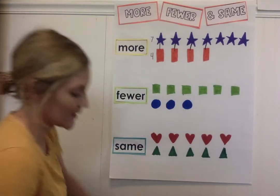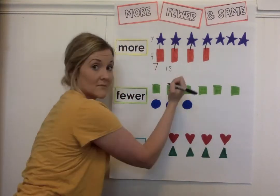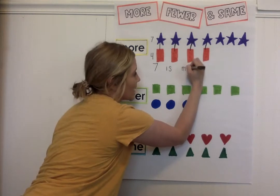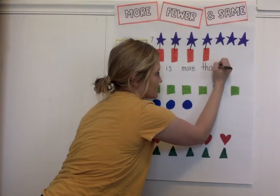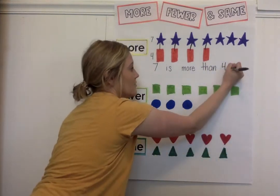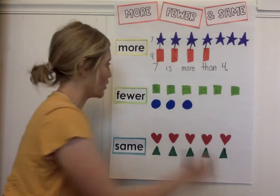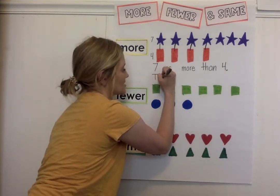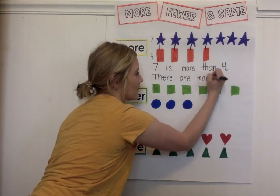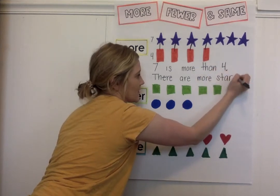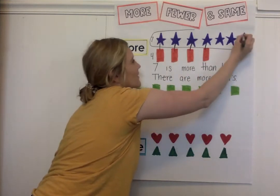If we talk about it in numbers, we would say that seven is more than four. So if someone asks you, are there more stars or rectangles, you would say there are more stars. And we would circle the stars because there are more stars.